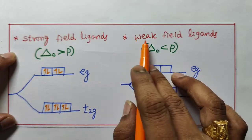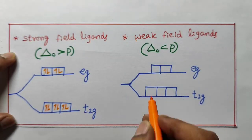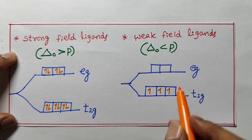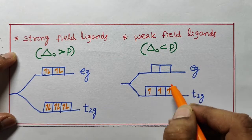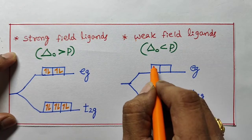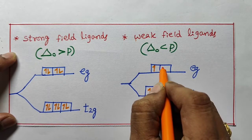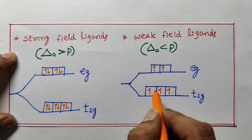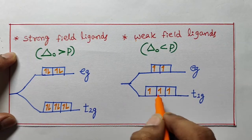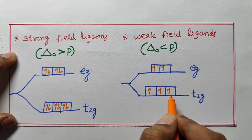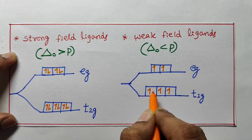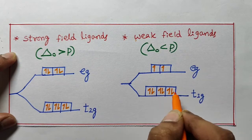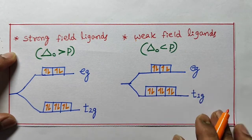Now let us see the weak field ligand. One, two, three electrons fill into t2g. Here energy difference is less, so the fourth electron enters into eg. The fifth electron also enters into eg like this. Then the sixth electron comes back to t2g at the lower energy level. So six, seven, eight, nine, ten.